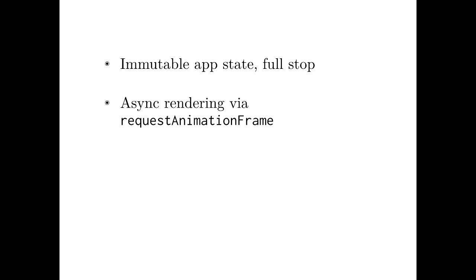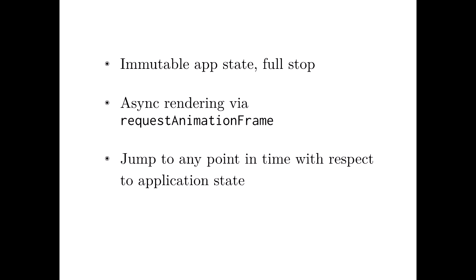So I set out some design constraints. Number one was immutable app state full stop. We just have a single source of truth. Immutable app state, nothing else. Async rendering via request animation frame. I wanted, it didn't matter how fast the updates come, we always render 60 frames a second. This means by default all updates are batched. You have this to some degree in React, but Om takes it a little bit further. Another thing I wanted to maintain is that you should be able to jump to any point in time with respect to the app state. So if I record a snapshot and the application timeline advances a minute into the future, I should be able to load that previous app state and keep going. It should just work.